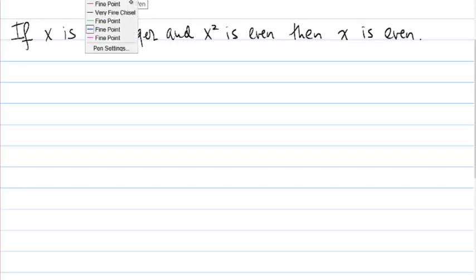So let's first identify the hypothesis, and there are actually two parts to the hypothesis. The first one is that x is an integer, and the second part is that x² is even.